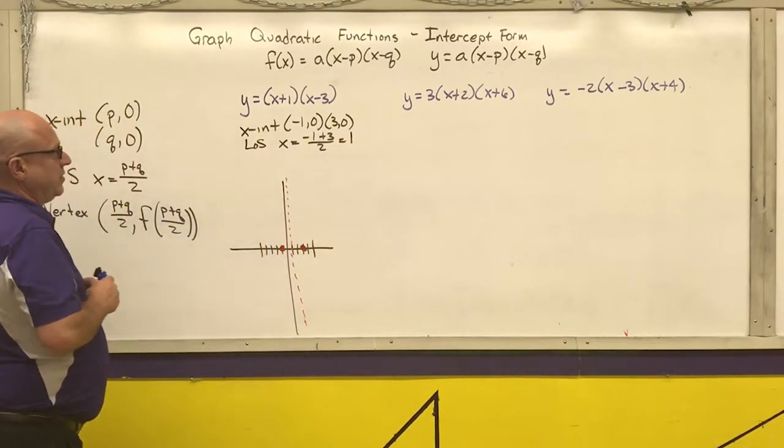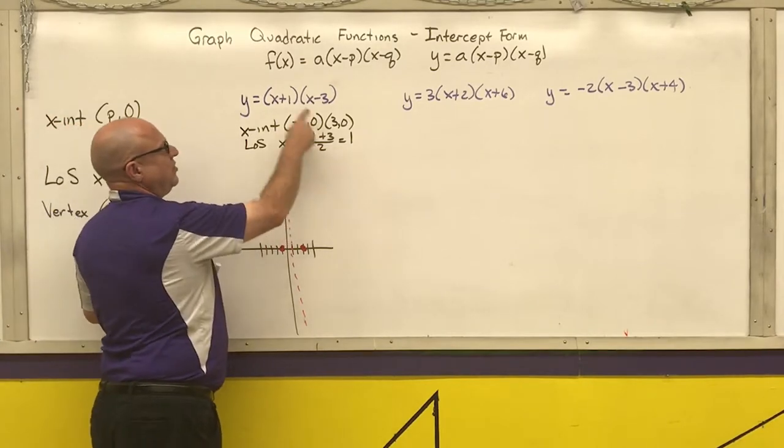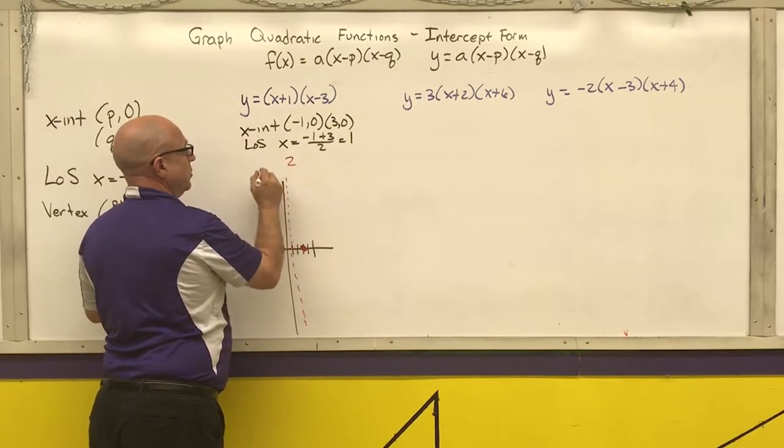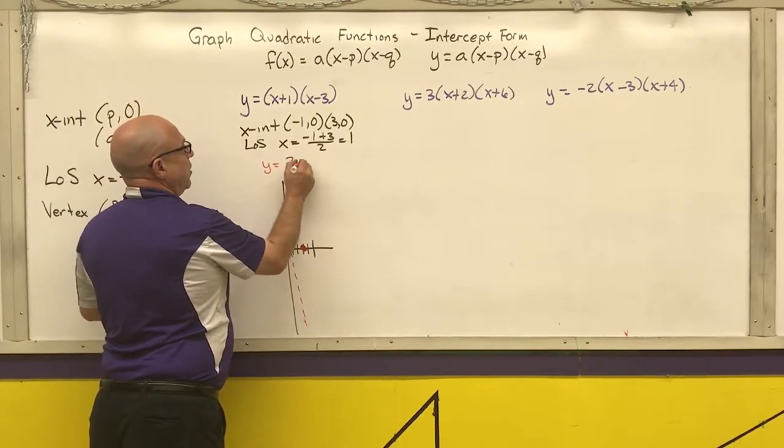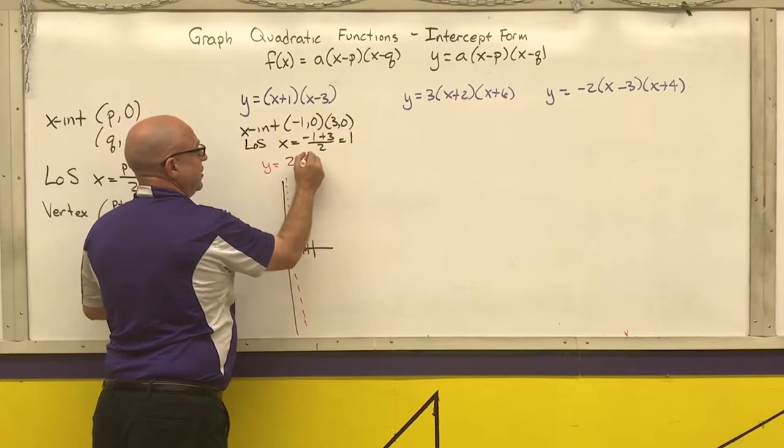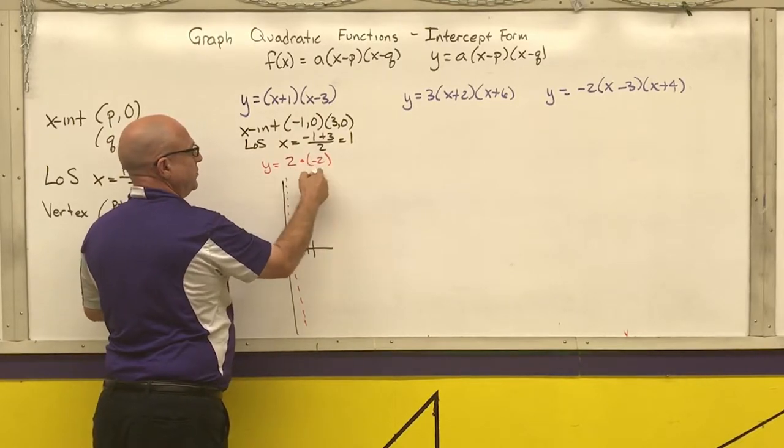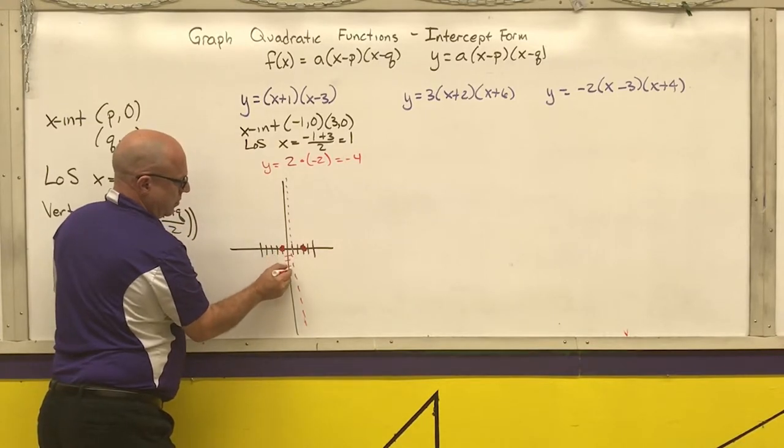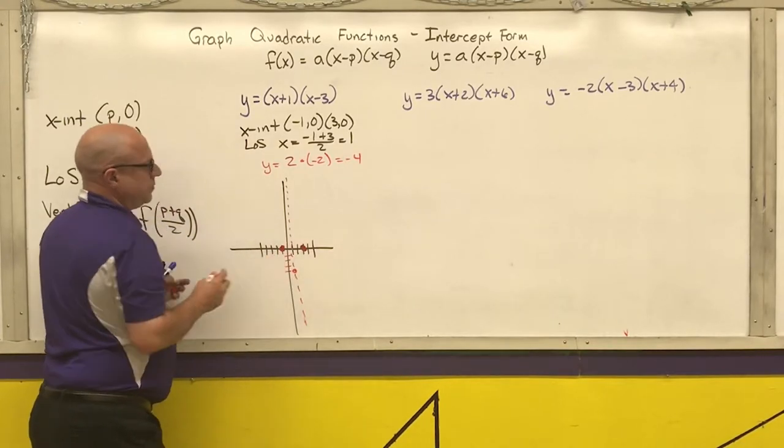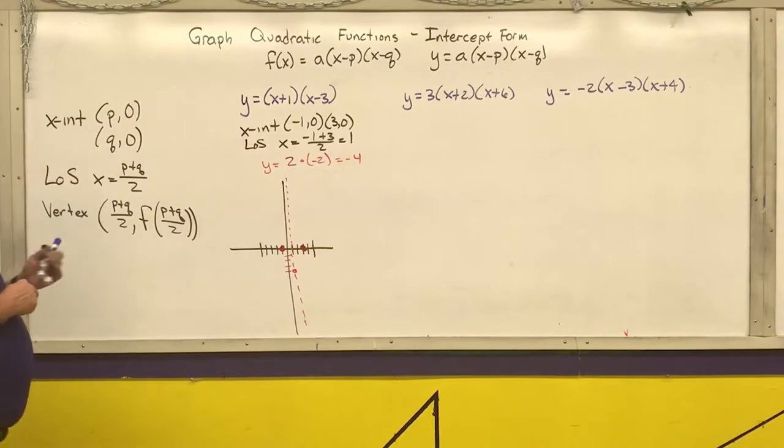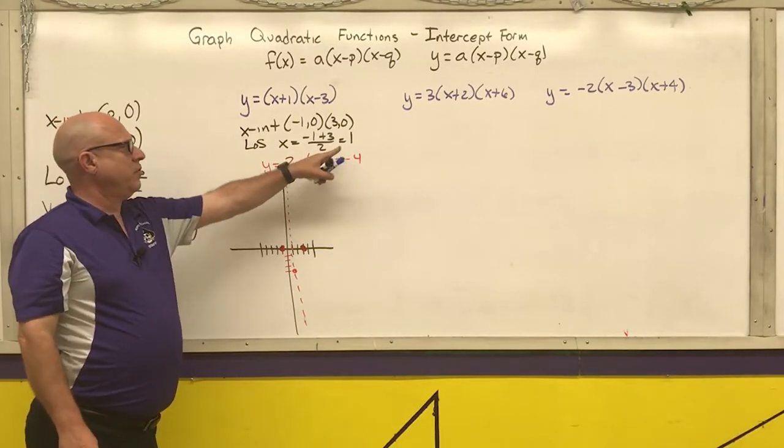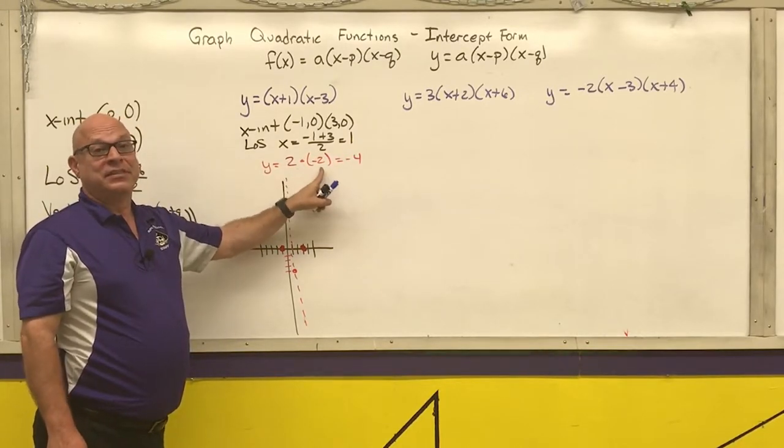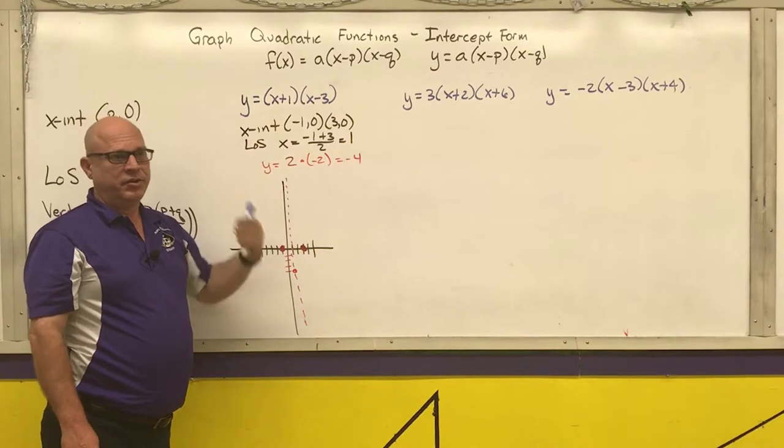Now to find the vertex, I put this 1 into both spots up here. 1 plus 1 is 2. 1 minus 3 is negative 2. 2 times negative 2 is negative 4. One thing I want to point out is if you are putting the number in that you think is the x-coordinate for the vertex, these two numbers have to be the same with opposite signs. That's how you can check that you're in the right direction.